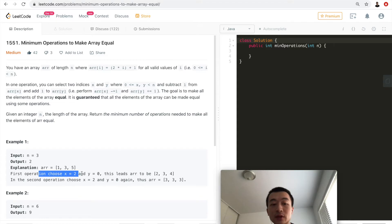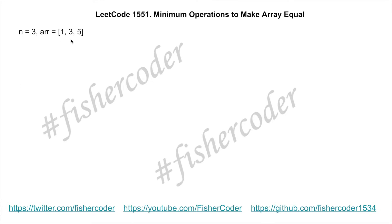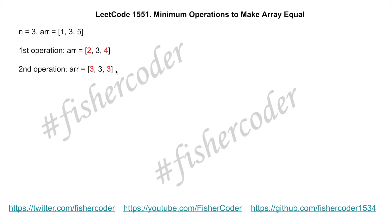Looking at our slides for the first example, n=3 and the array is [1, 3, 5]. In the first operation we pick the first and last indices, increment the first and decrement the last, going from [1, 3, 5] to [2, 3, 4]. In the second operation we increment the first element and decrement the last, giving us [3, 3, 3] — all elements equal. So we need two operations, which is why the output is 2.